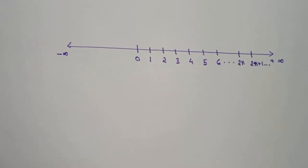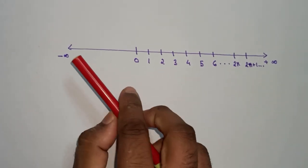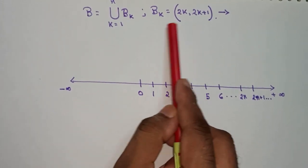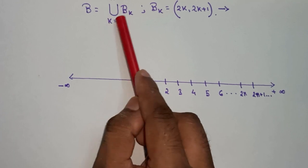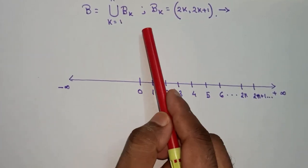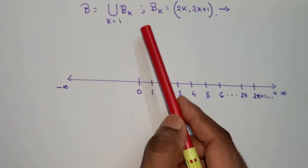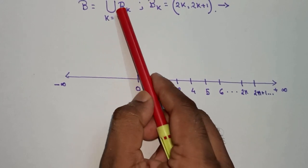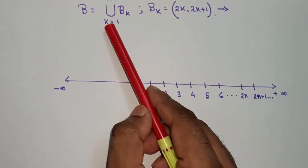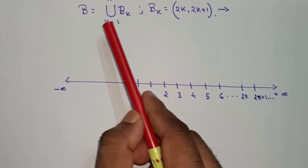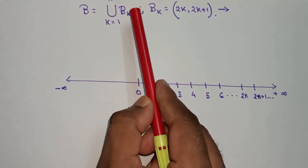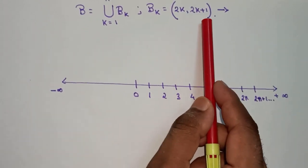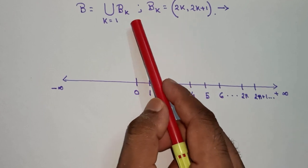Here I demonstrate what is written there. This is my number line and this is the set B, which is indeed a union of open sets — a finite union of open sets. As we know, or will prove in our next video when we prove the theorems of open sets, the union of an arbitrary number of open sets is actually an open set. So we can certainly say that this B set, which is a union of open sets, is an open set. All these B_k's are open sets because those are open intervals.